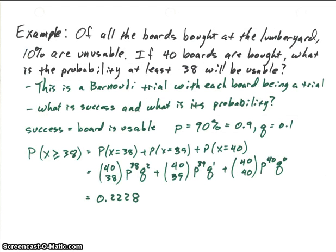Let's do an example. Suppose we have a lumberyard, and of all the boards bought at this lumberyard, 10% are unusable — they might be warped, or have some cracks in them. If 40 boards are bought, what's the probability that at least 38 will be usable? When doing these problems, you want to check whether it's a Bernoulli trial. We're assuming all the boards are independent, so each board will be considered a trial and they will be Bernoulli trials.